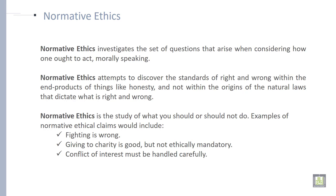Normative ethics is the second type of ethics. It investigates the set of questions that arise when considering how one ought to act, morally speaking. Normative ethics attempts to discover the standard of right and wrong within the end products of things like honesty, and not within the origins of the natural laws that dictate what is right and wrong. Examples of normative ethical claims include: fighting is wrong, giving to charity is good but not ethically mandatory, and conflict of interest must be handled carefully.